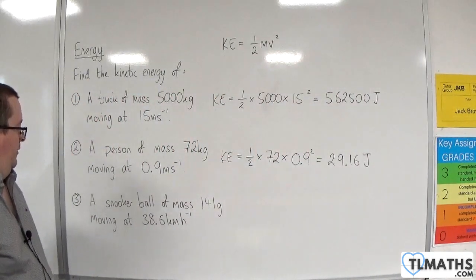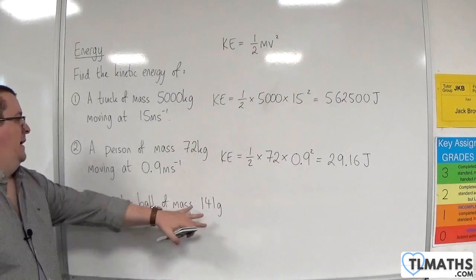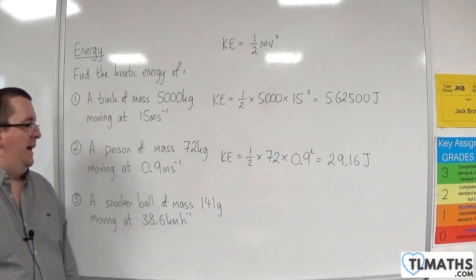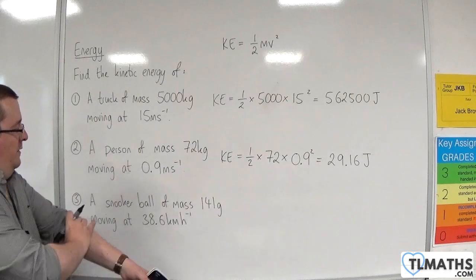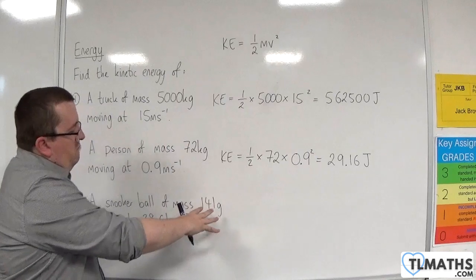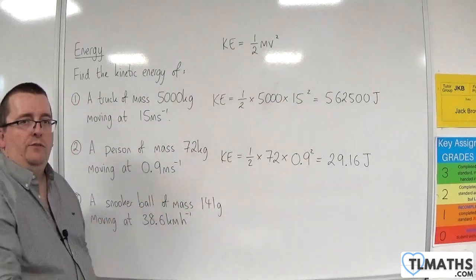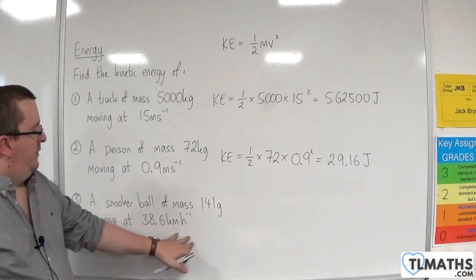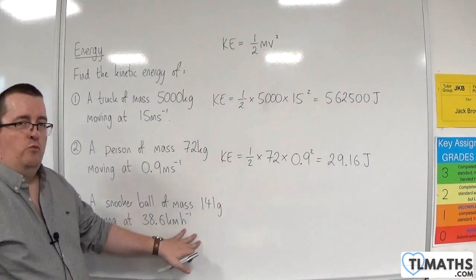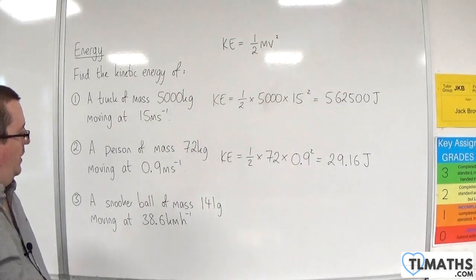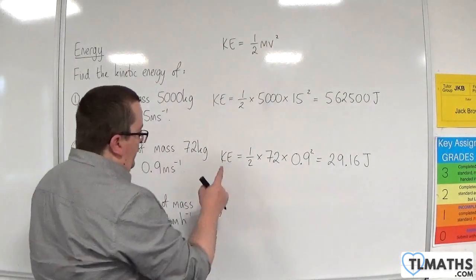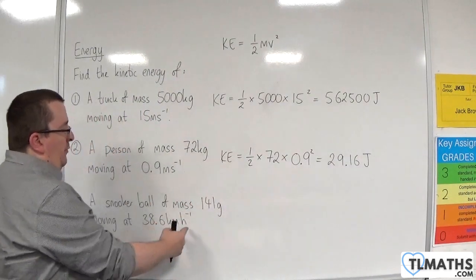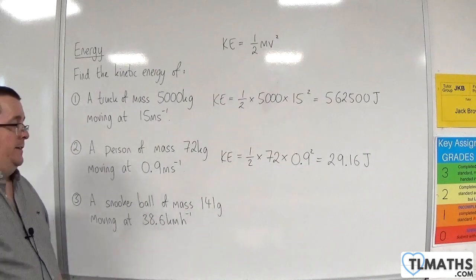Last but not least, we've got a snooker ball of mass 141 grams moving at 38.6 kilometres per hour. This is about the correct weight of a snooker ball and about its break-off shot. You'll notice that I've purposely changed the units here. We've got 141 grams rather than kilos, and kilometres per hour rather than metres per second, so we've got to deal with that.